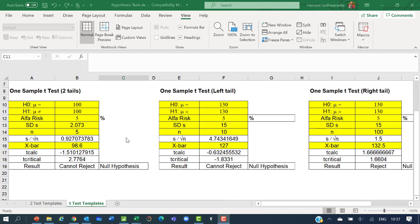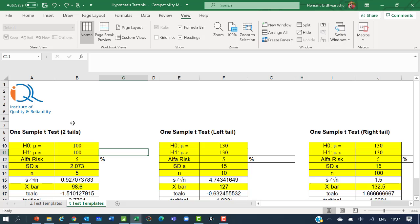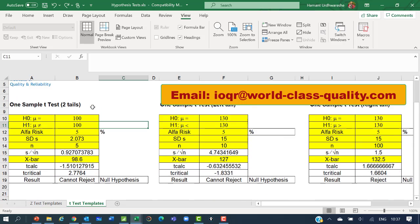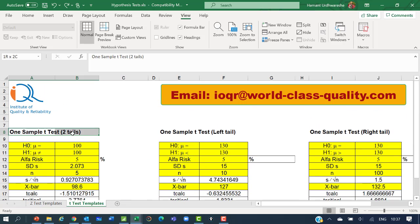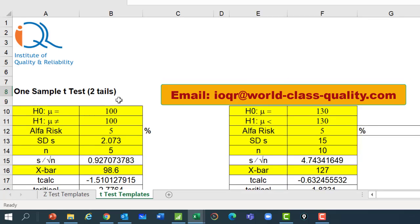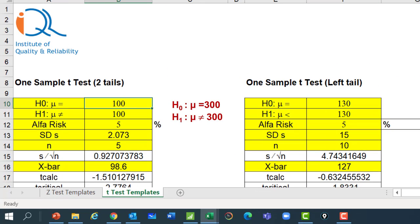We can also use template from Institute of Quality and Reliability to solve this problem. If you want this template, please write to us on the email as shown here. Here we use the template for one sample T test with two tails. You also have templates available for left tail and right tail. And here H0: mu equals 300. We provide the input in the yellow boxes. H1: mu not equal to 300. Alpha-risk default is 5%.